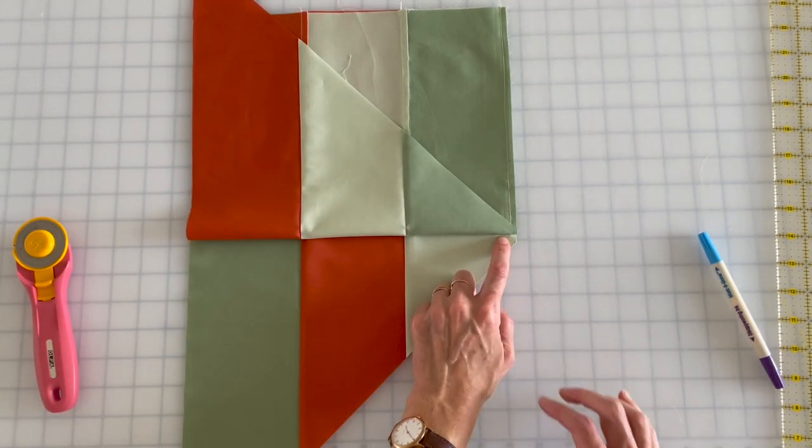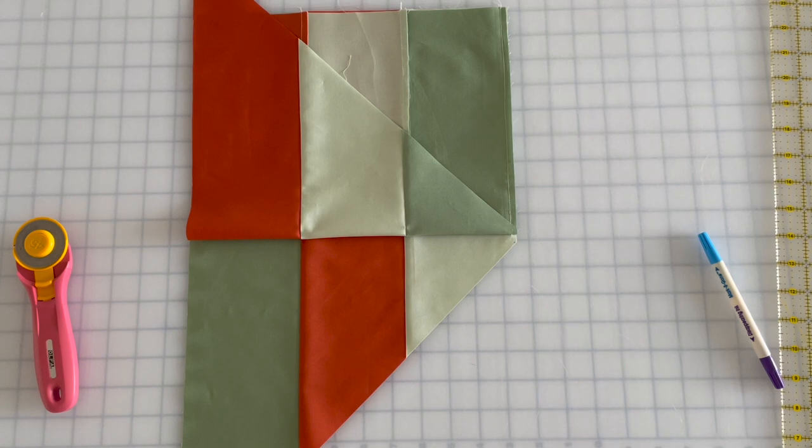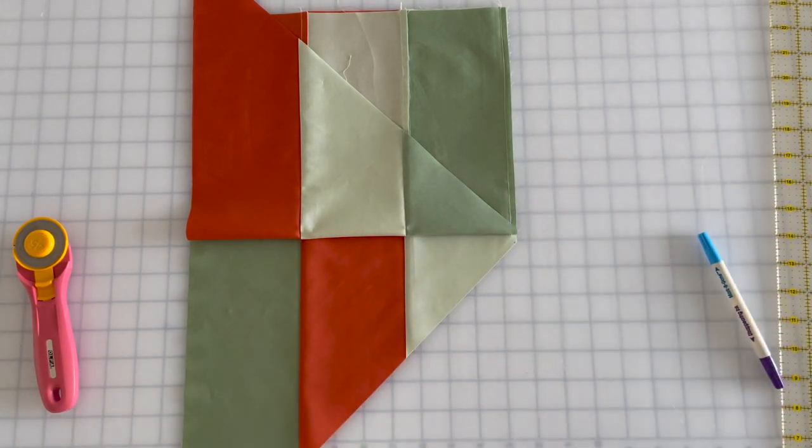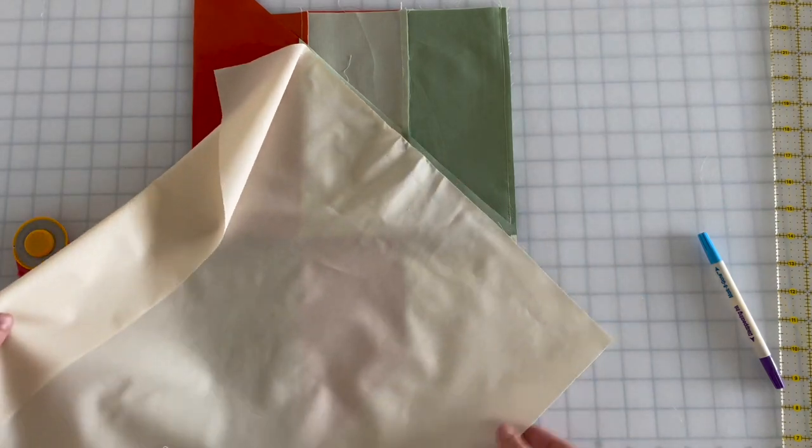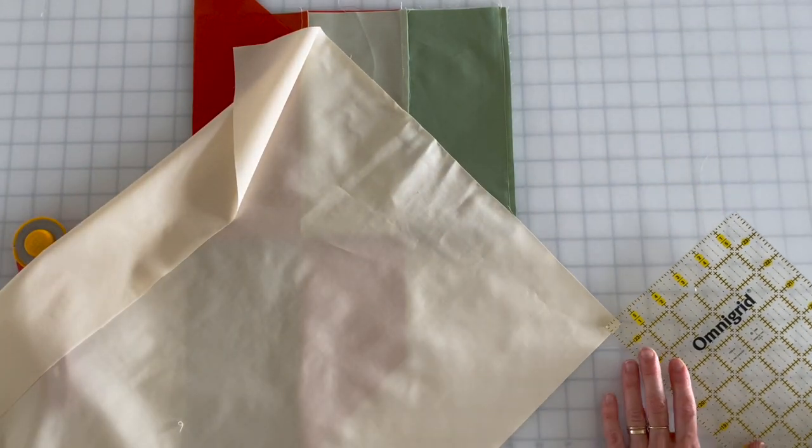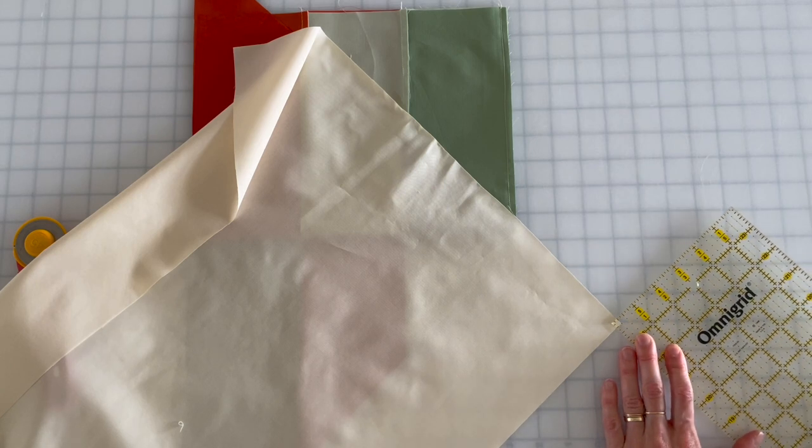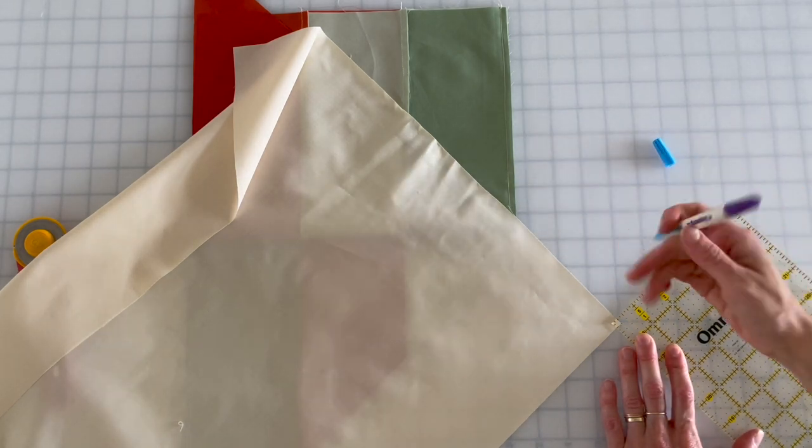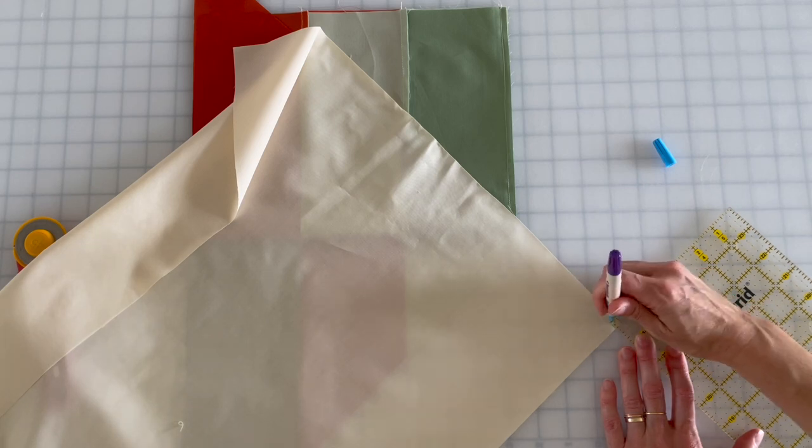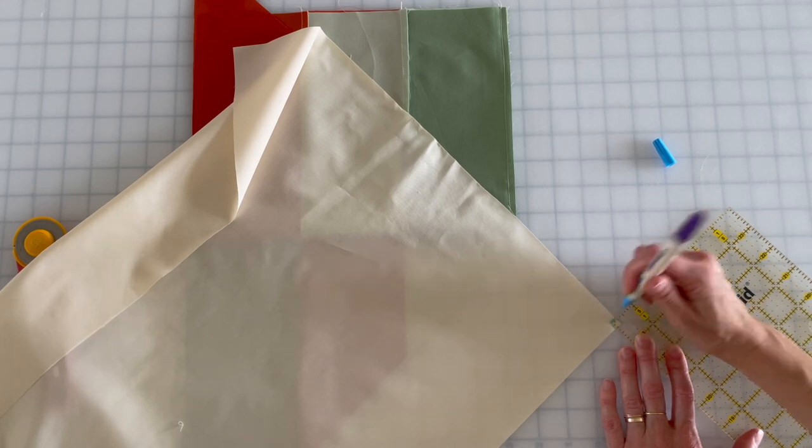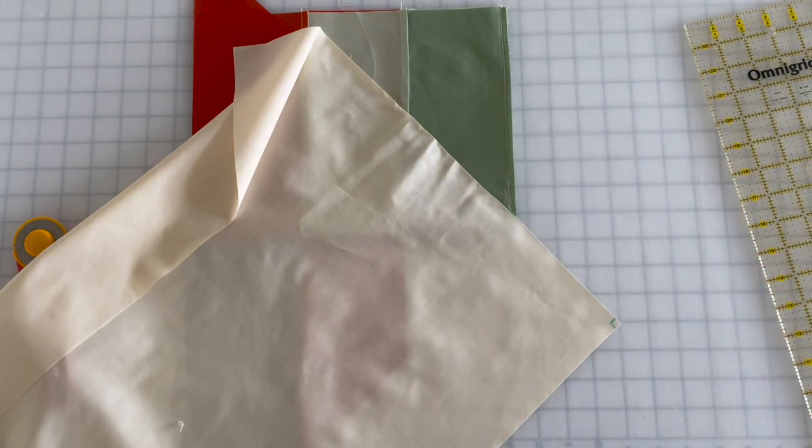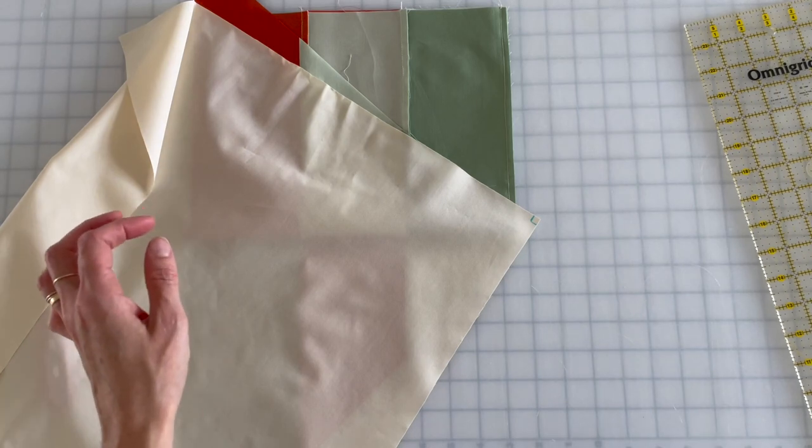I'm going to grab my square, my background square, and I'm going to give myself a quarter inch square guide mark right in the tippy toppy corner. Really clear, no mistaking it. I want to have all the corners, all of it very, very obvious.